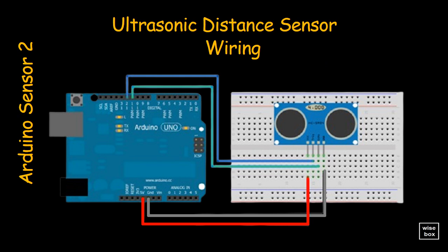This ultrasonic sensor contains two sensors, a speaker and a microphone. The speaker is connected to pin 12 and is an output. The microphone is connected to pin 11 and is an input. There are also connections for VCC 5 volts and ground wiring.